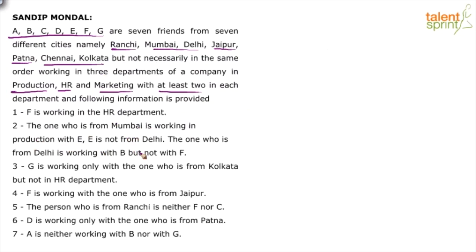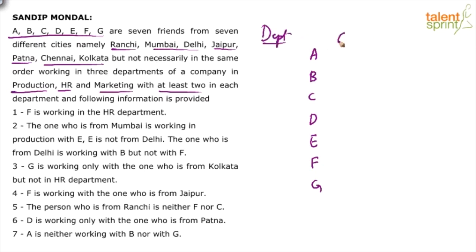Now, how do we solve such questions? As discussed in earlier videos, first list down the persons. So maybe try with that — A, B, C, D, E, F, and G — 7 persons. On one side we take the names of the cities, and the other side the department. Let's say department on the left-hand side and cities on the right-hand side. Looking at the clues: F is working in the HR department. Remember, minimum 2 in each department.